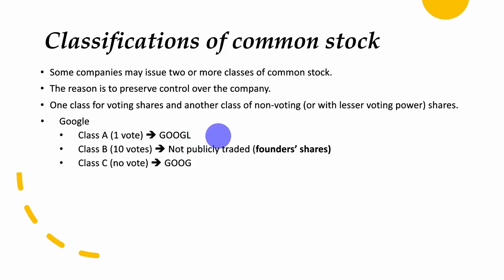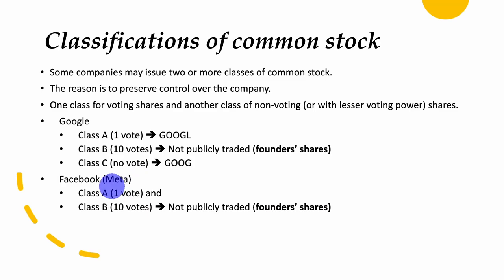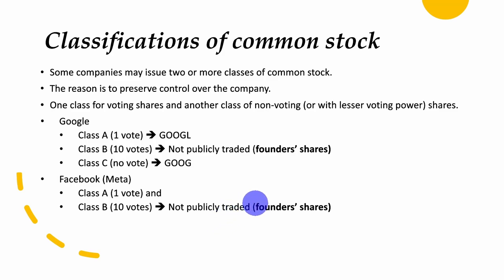Facebook, or Meta, has two classes of shares: Class A with one vote, and Class B with ten votes. Class B is not publicly traded and is held by founder Mark Zuckerberg and some insiders, carrying ten votes per share. Zoom also has two classes of shares — Class A and Class B — where Class B has ten votes and is held by the founders.